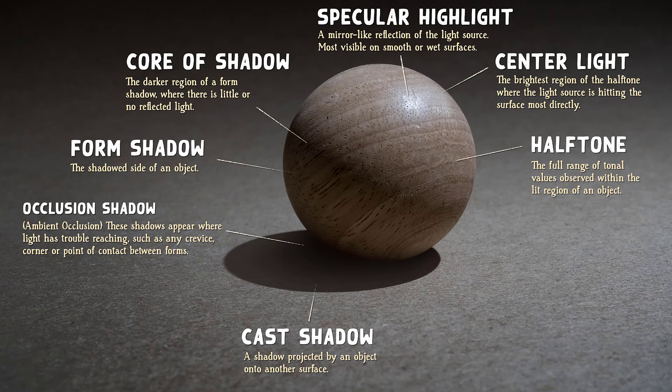Reflected light provides the illumination that we see within shadows. On the sphere, you can see where the light from the ground plane is bouncing up into the shadows. If there were no reflected light or ambient light, the shadows would be completely dark. It's important that the value of reflected light in your shadows not become as bright as your half tones. This is a common mistake that will break the hierarchy of value in your image and the illusion of light with it.